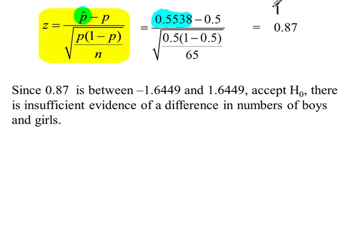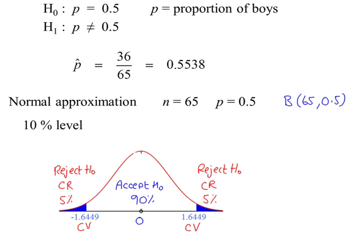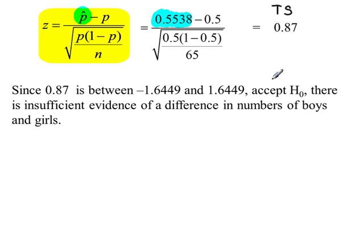So our test statistic is 0.87, and 0.87 is in the acceptance region. It's in between minus 1.6449 and 1.6449. So we accept H0 and conclude that there is insufficient evidence of a difference in the numbers of boys and girls.